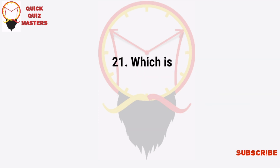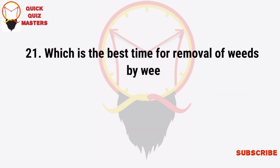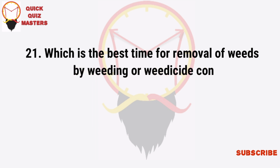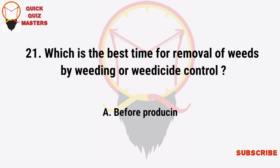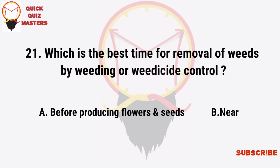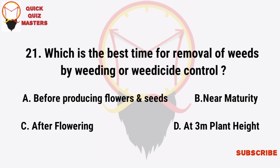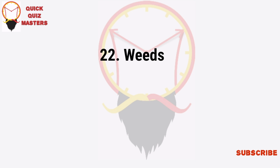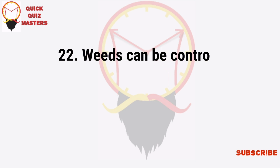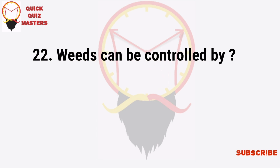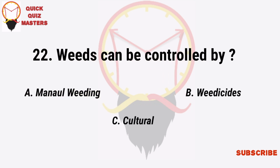Which is the best time for removal of weeds by weeding or weedicide control? Before producing flowers and seeds, near maturity, after flowering, or at 3-meter plant height. Weeds can be controlled by manual weeding, weeding sites, cultural practices — all of these.